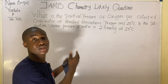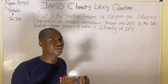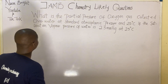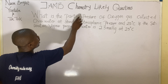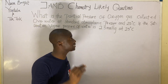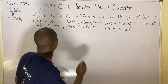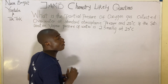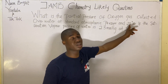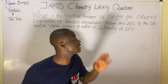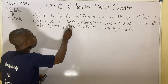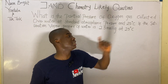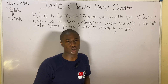If you came across this question in the JAMB exam, here is how to solve it — it is very easy. The question says: what is the partial pressure of oxygen gas collected over water at standard atmospheric pressure and 25 degrees Celsius, if the saturation vapor pressure of water is 23 mmHg at 25 degrees Celsius?